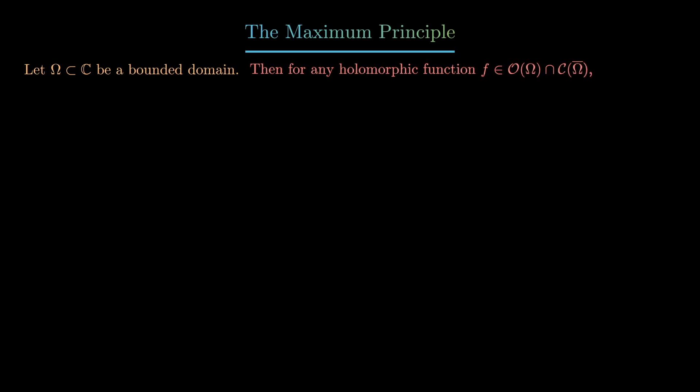Then if we have a holomorphic map which is holomorphic at every point of Ω and continuous on the boundary, then the maximum of the absolute value of f occurs exactly on the boundary. So a holomorphic map, when you take its modulus, the resulting function cannot have an interior maximum.